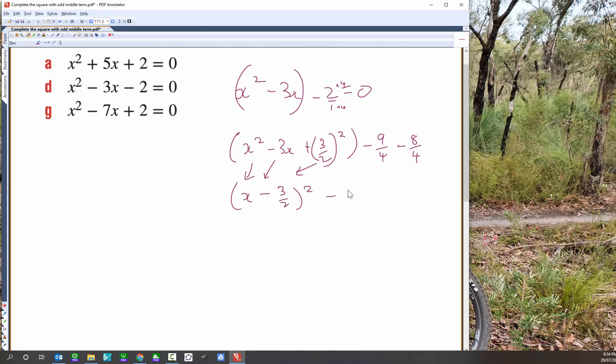Take away, what's that? 17 on 4 equals 0. We've got the equal 0 there. Okay, we'll do the same thing as we did before. x take 3 on 2, all squared, equals 17 on 4.